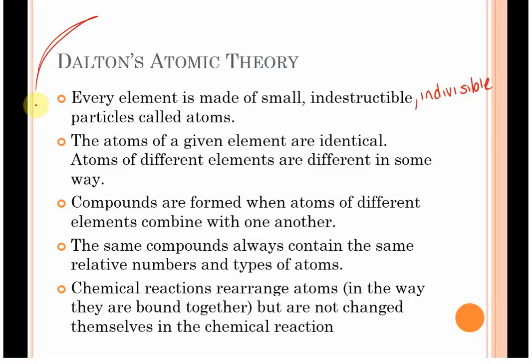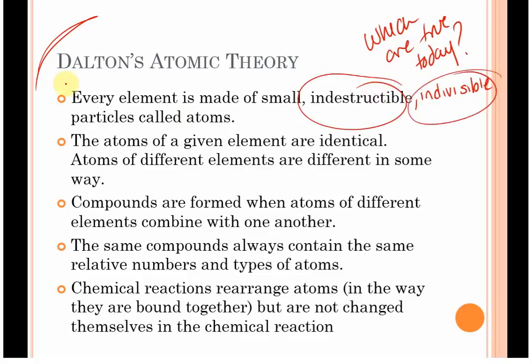Let's talk about this for a minute. Which of these do we still consider true? Every atom is made of small, indestructible particles called atoms. Is that true? Every element is made of atoms, but we no longer consider them indestructible or indivisible. So, no. We consider them divisible because we now know about protons, neutrons, and electrons. We consider them destructible because of radiation and nuclear power. The atom of a given element is going to be identical. True or false? False. If you've read ahead, you would say that this is false because we have isotopes and ions.